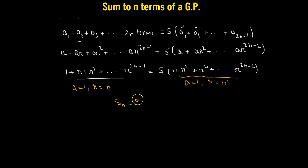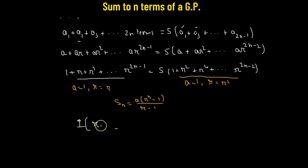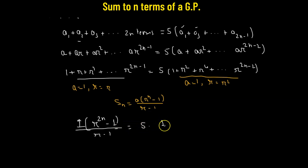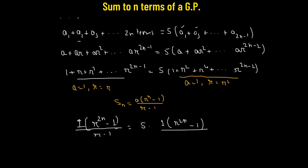We use the sum formula: a(r^n − 1)/(r − 1). The left side has 2n terms, giving (r^(2n) − 1)/(r − 1). For the right side, we have only n terms (the odd-placed terms), so it becomes (r^(2n) − 1)/(r² − 1).